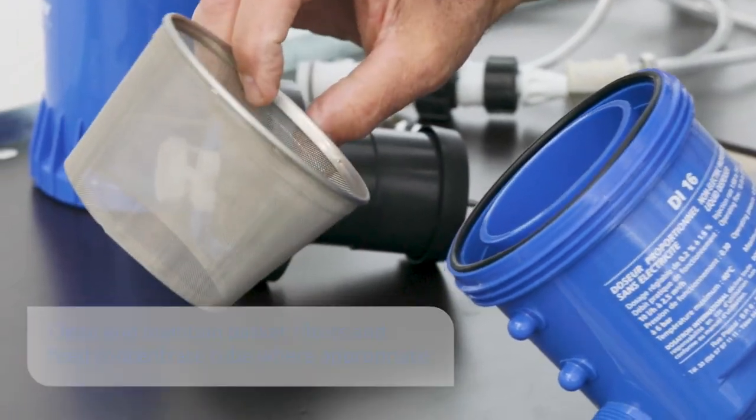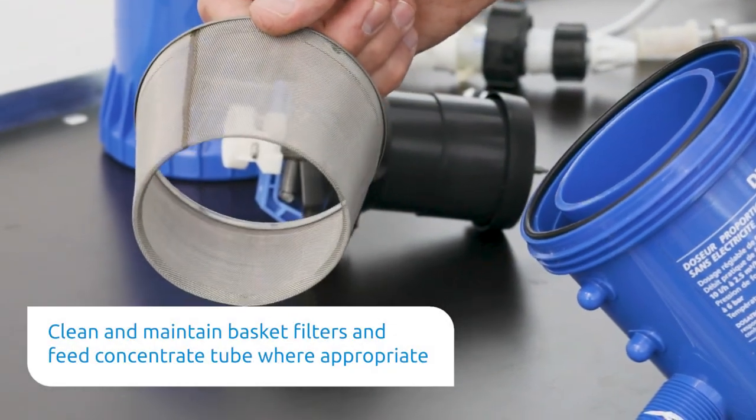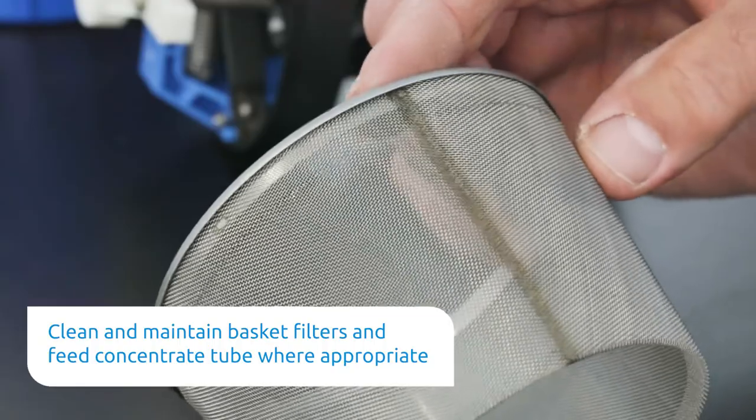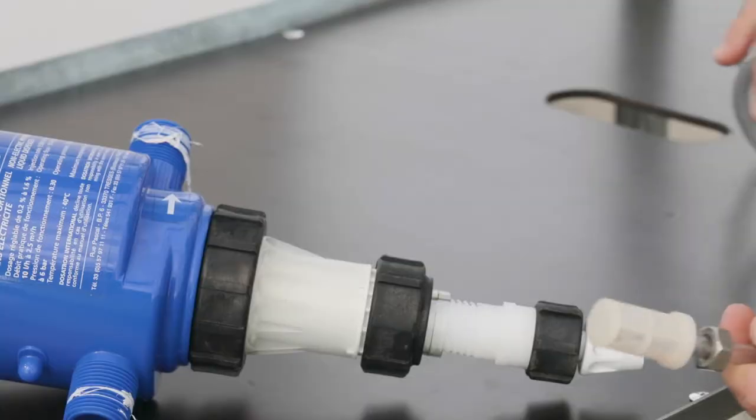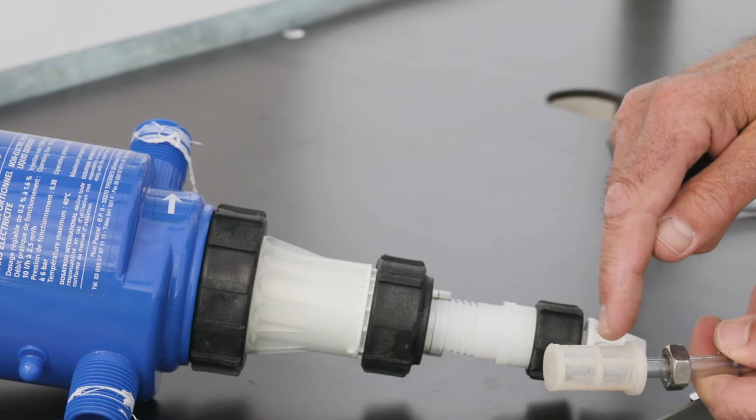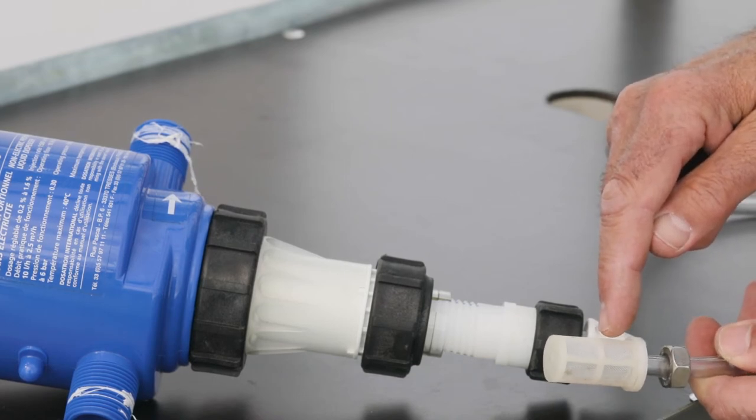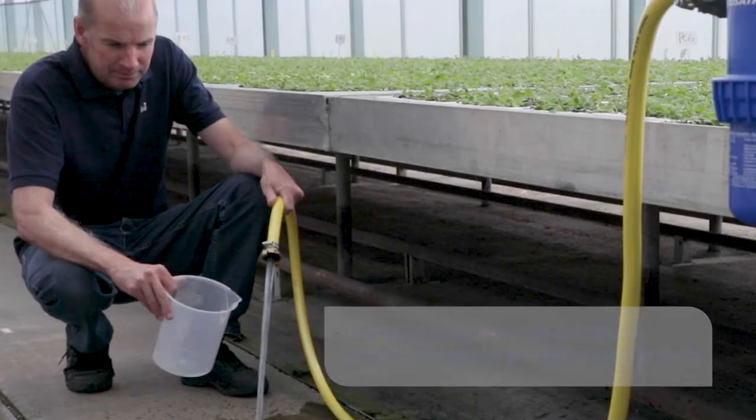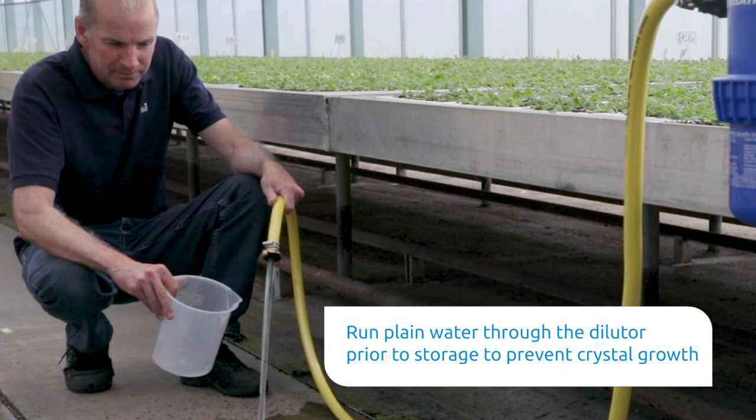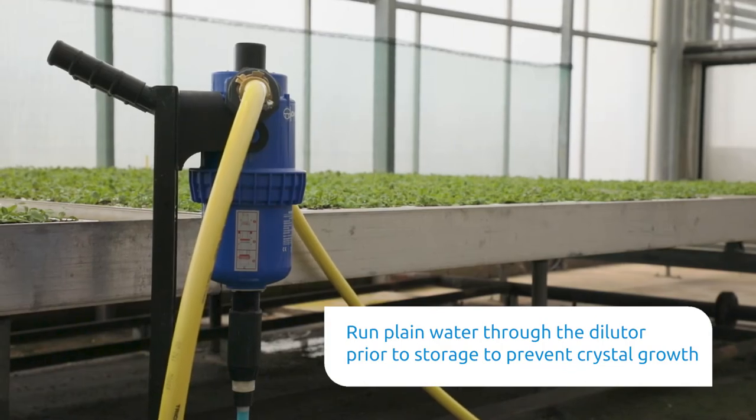Third point is to take the basket filters out and make sure they're clean and also make sure that the filter at the end of the feed concentrate tube is also cleaned regularly. The algae does tend to grow on these. Just run them through with plain water and prevent crystals forming in the actual piston area.